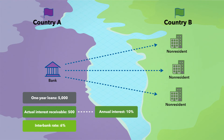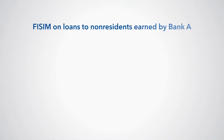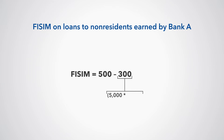The interbank rate, or reference rate, between the resident and non-resident financial corporations is 6%. Under this scenario, FISIM on loans to non-residents earned by Bank A is calculated as actual interest receivable, 500, minus pure interest receivable, 300, which equals 200.